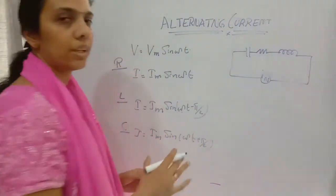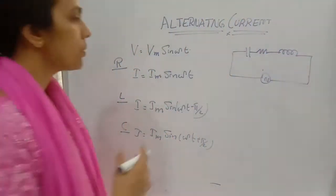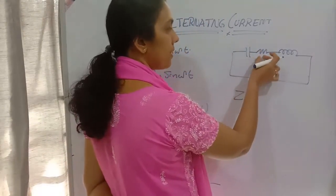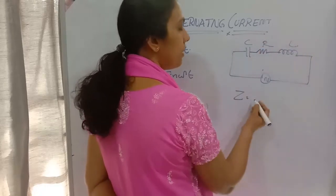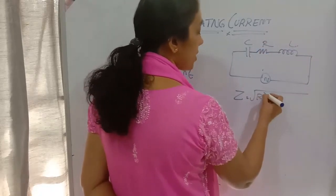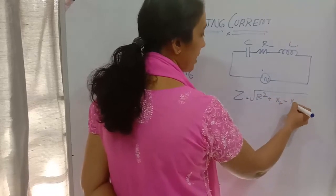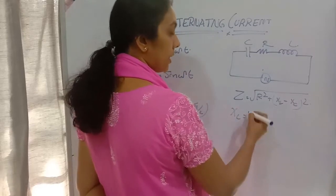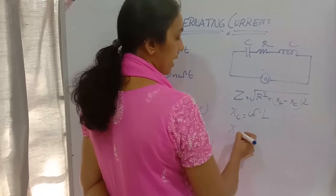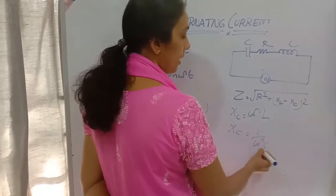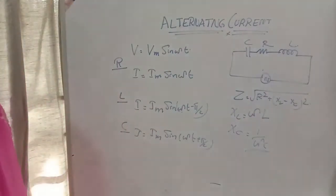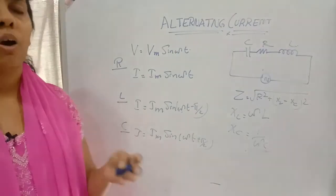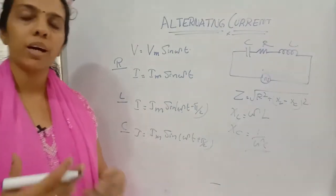If we are connecting all three in the same circuit, we get an impedance. Impedance means total resistance including contributions from capacitor, resistor, and inductor. Impedance Z is equal to the square root of R squared plus (XL minus XC) squared, where XL equals omega L and XC equals 1 by omega C. This is an important formula. You can find this using a phasor diagram or by an analytical solution method.